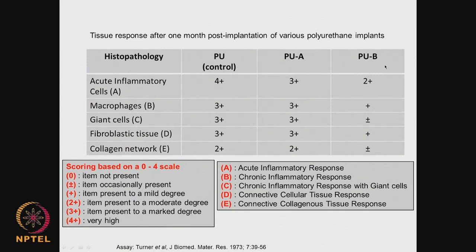From the histopathology data, we can count the different types of tissues formed and quantify them. The scoring is: 0 means not present, plus/minus means occasionally present, 1+ means present to a mild degree, 2+ means moderate degree, 3+ means marked degree, and 4+ means very high. So this is a qualitative representation of the observations. Looking at the control, acute inflammatory cells are found to a very high degree, whereas in the modified systems it is found to a marked degree in one modification and a moderate degree in another — there is a decrease in inflammatory cells as we modify the control polymer.